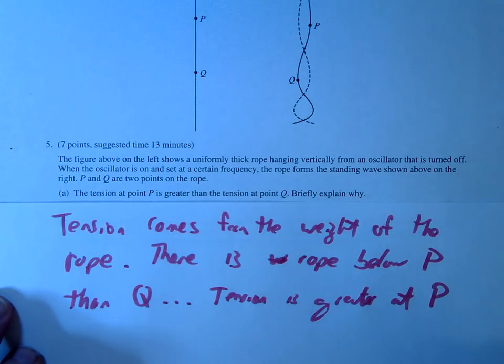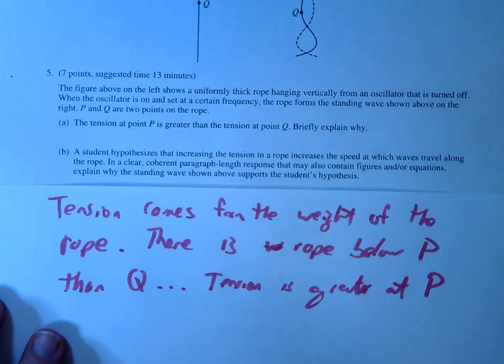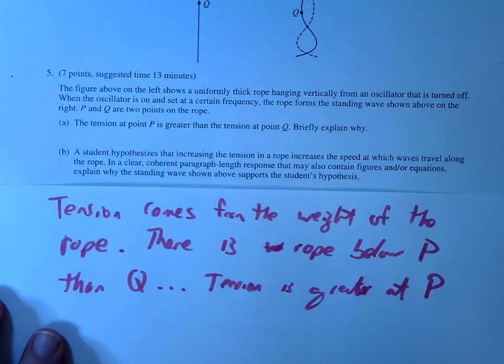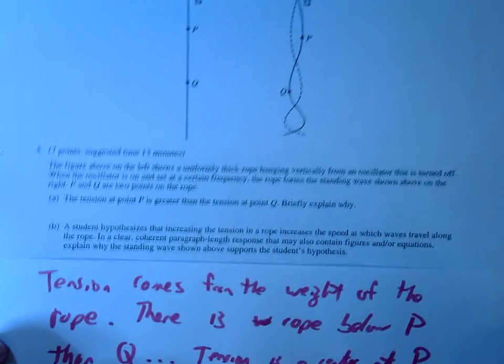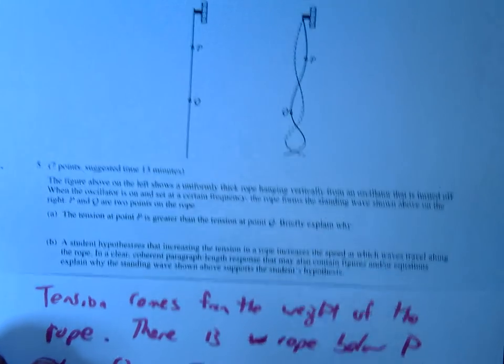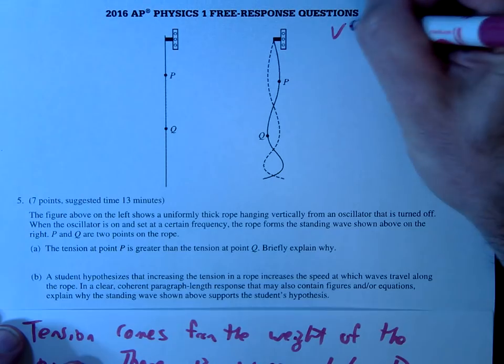Alright the second question is the students hypothesizing that as the tension goes up, the speed goes up. And we want to kind of explain why that's true. Why is tension, or you know, how does the visual prove this? So kind of the governing equation for us is going to be V equals F lambda.